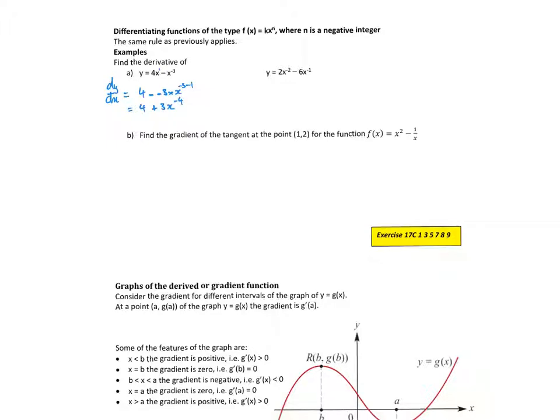So it is possible we might write that as 4 plus 3 over x to the 4. So that's what my derivative rule, my gradient rule is in that instance.